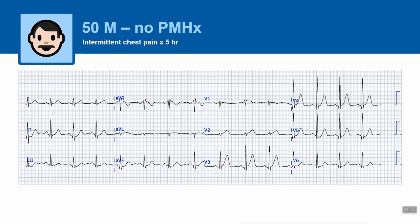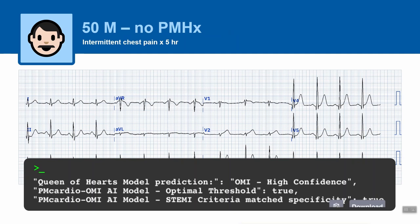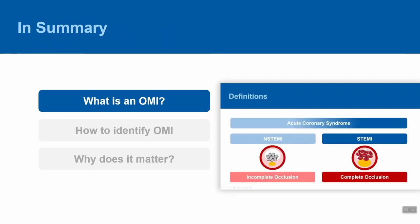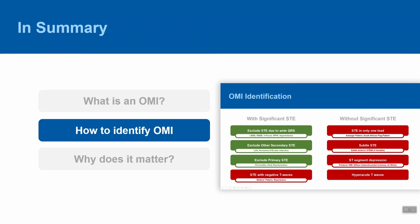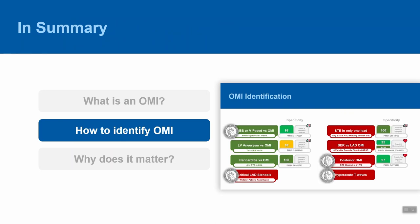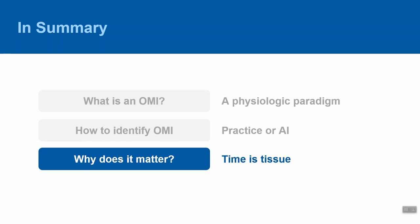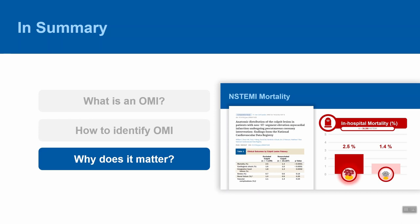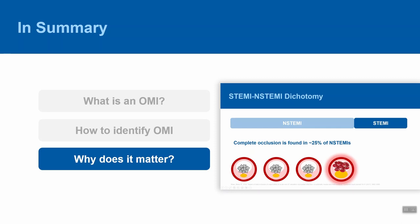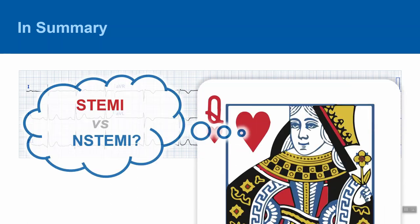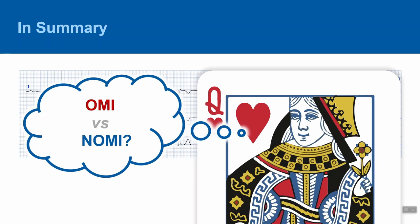Returning to the first hyperacute T-wave example, the Queen of Hearts model predicted with high confidence that this was an OMI, delivering the result in a clear graphical user interface. In summary, OMI is a physiologic paradigm placing underlying pathology above a single ECG segment. We can identify OMIs using a relatively simple 8-to-10 step approach with high specificity, and AI will likely soon assist in these decisions. Time is tissue, and large studies demonstrate a two-fold mortality increase in OMIs — which make up at least 25% of all NSTEMIs. So perhaps the next time you evaluate an ECG of a patient with chest pain, rather than thinking STEMI vs. NSTEMI, you'll be thinking OMI vs. NOMI.